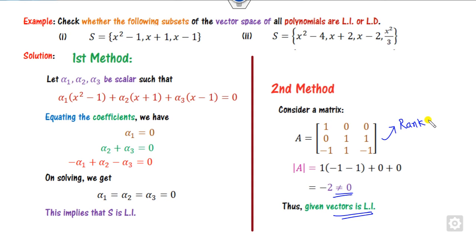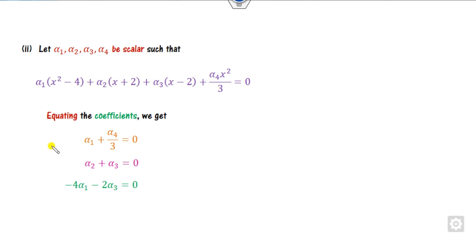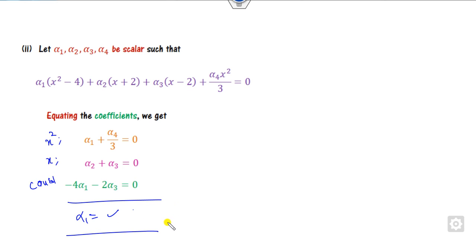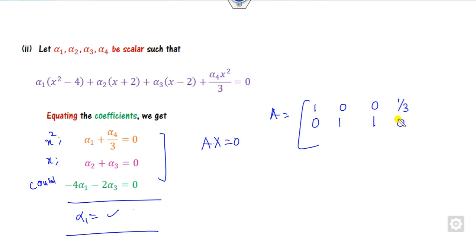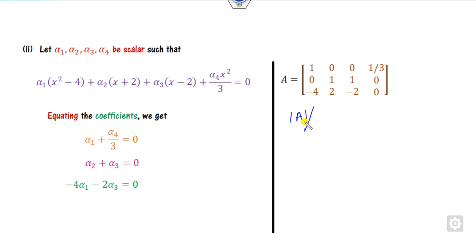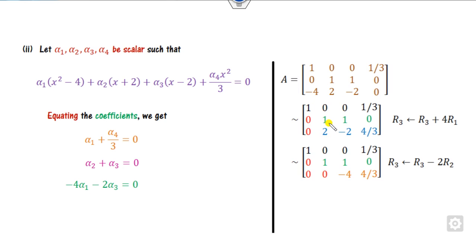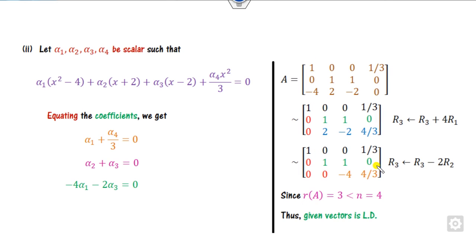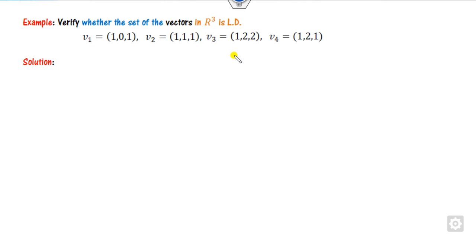Using Method 2 for the polynomial LI check: represent each polynomial by its coefficient vector. For x² - 1, write (1, 0, -1); for x + 1, write (0, 1, 1); and so on. Find the determinant of this coefficient matrix — since it is non-zero, the polynomials are LI. For the second polynomial example with four vectors v1, v2, v3, v4 in a 3-dimensional space: since determinant is not applicable (not a square matrix), use rank. After row reduction, rank = 3, which is less than n = 4, so they are LD.